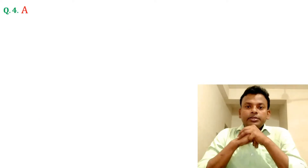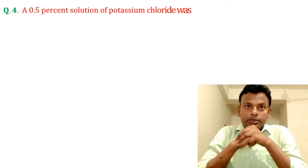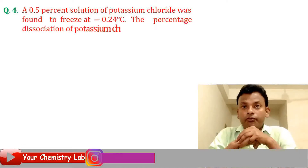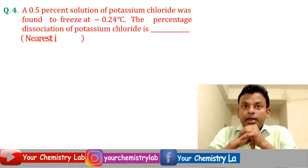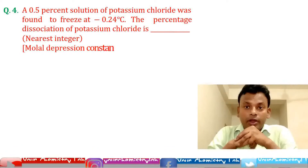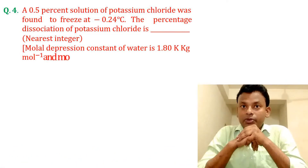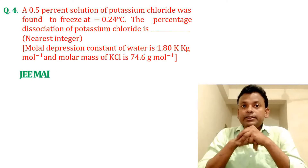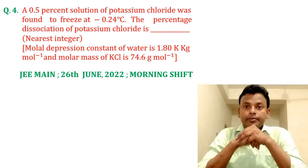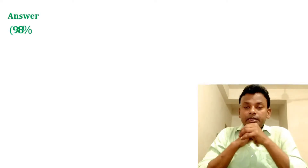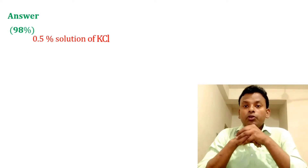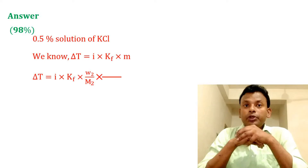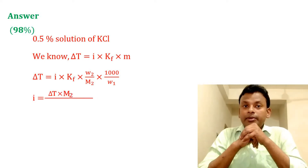Question 4: A 0.5 percent solution of potassium chloride was found to freeze at −0.24 degrees Celsius. The percentage of dissociation of potassium chloride is dash (nearest integer). Given: molar depression constant of water = 1.80 Kelvin·kg per mole, molar mass of KCl = 74.6 gram per mole. This question was set in JEE Main 26th June 2022 morning shift. Answer is 98. Using ΔT_f = i × K_f × m, putting in all values, i equals 1.979.